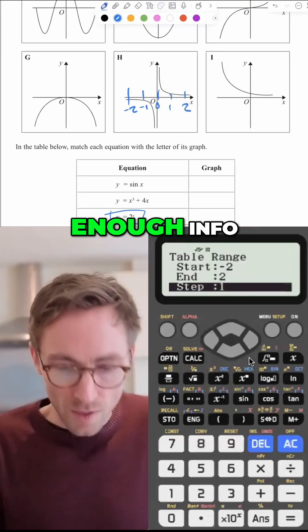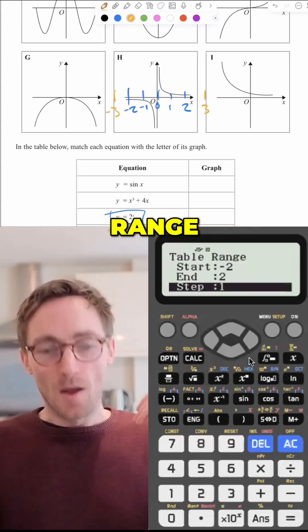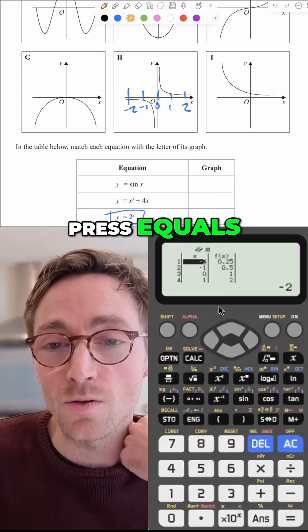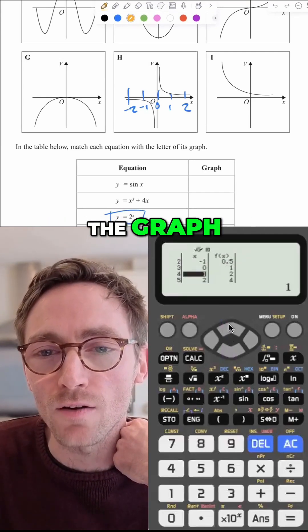And if that doesn't give you enough info, you can go from minus three to three and expand the range. But let's just start with minus two to two because it's the quickest. Press equals and this gives you all of the coordinates on the graph.